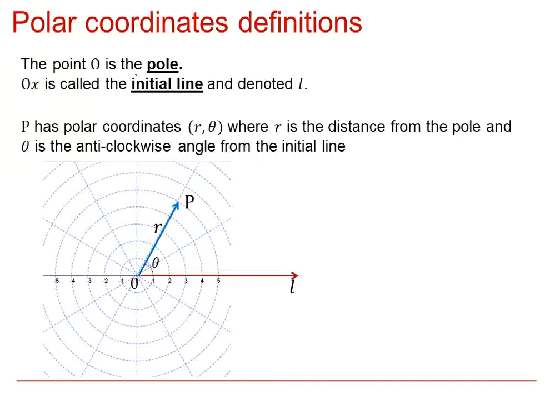The origin, the point we measure the distance from, is called the pole. And the OX axis, which is the line we measure the angle from, is called the initial line.